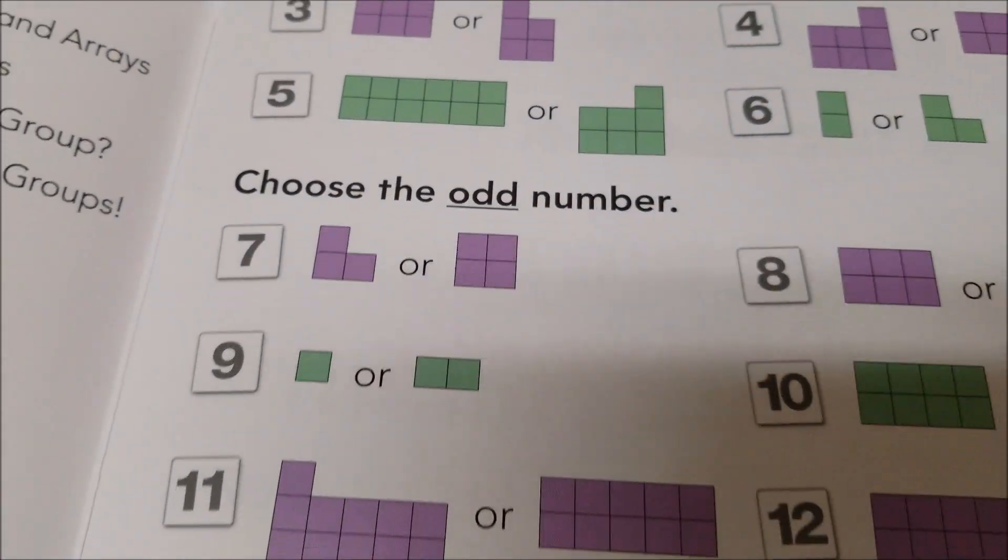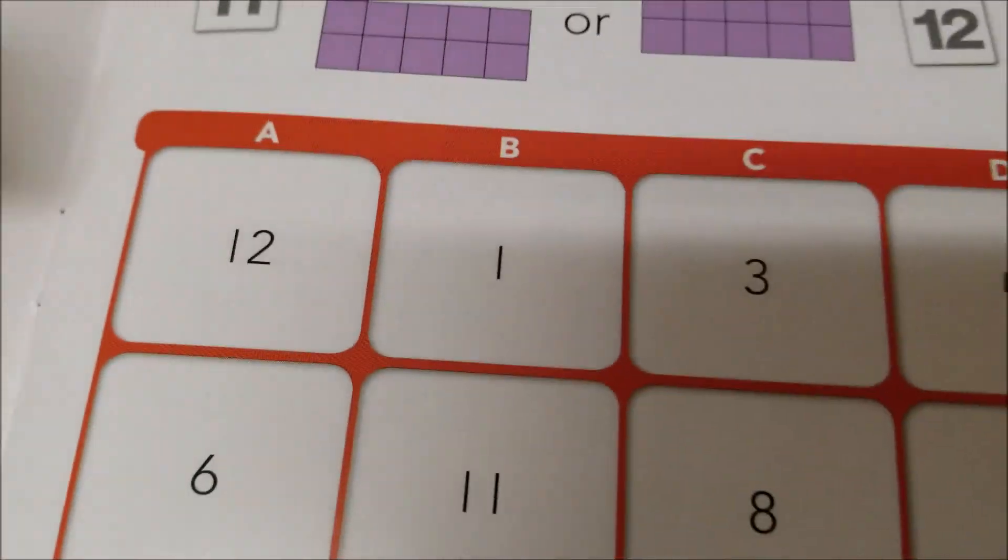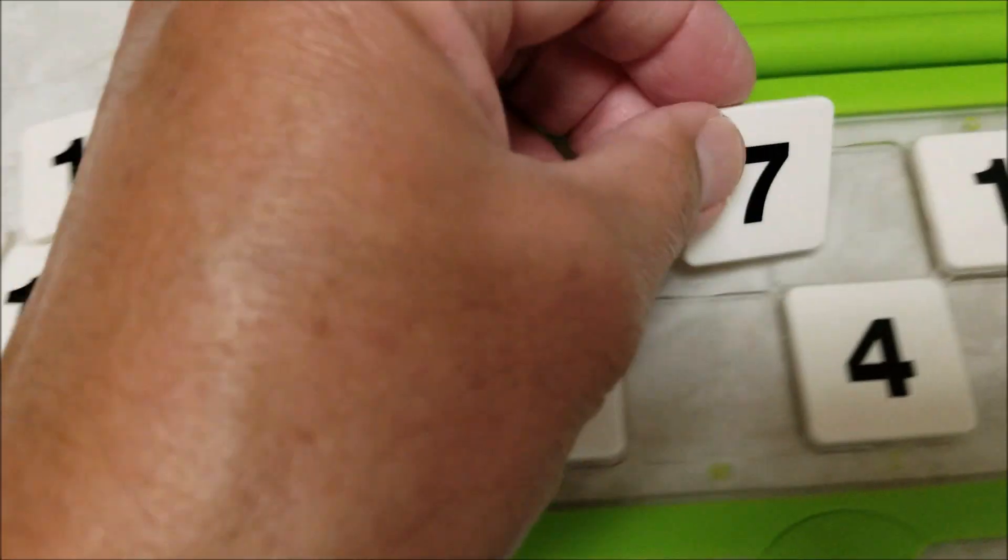Now I'm going down to the bottom, and it says choose the odd number. So that's going to be one, two, three. Three is C. So that's going to go there.